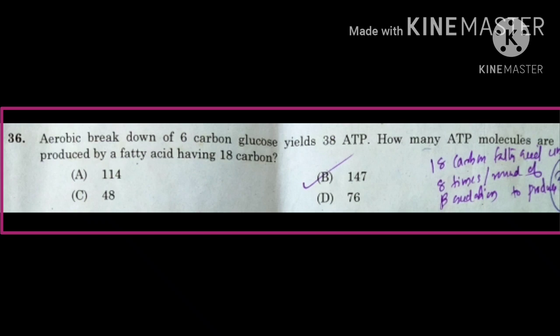The remaining 6-carbon fatty acetyl-CoA again undergoes the next round of beta oxidation, yielding a 2-carbon acetyl-CoA and a 4-carbon fatty acetyl-CoA. This 2-carbon acetyl-CoA again enters the Krebs cycle and yields 12 ATP. The 4-carbon fatty acetyl-CoA again undergoes beta oxidation and yields two molecules of 2-carbon acetyl-CoA, which both enter the Krebs cycle.